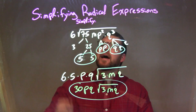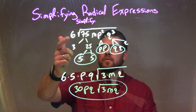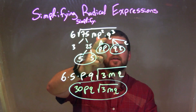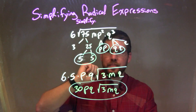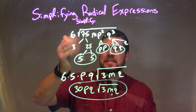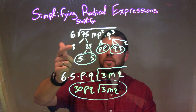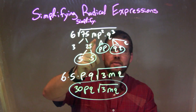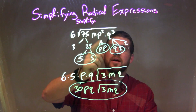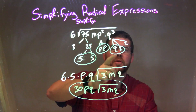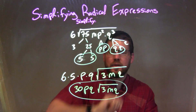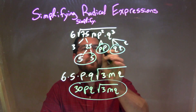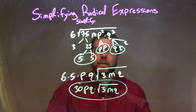So let's recap. We're given 6 times the square root of 75mp squared times q to the third. 75 breaks down to be 3 times 5 times 5. m is still there by itself. p squared is p times p, and q to the third is q times q times q. I then circled all my pairs.